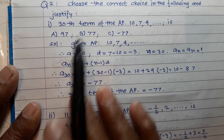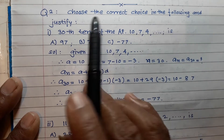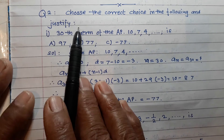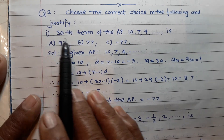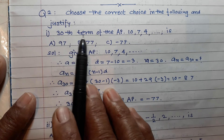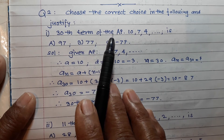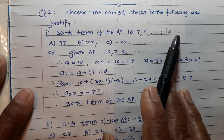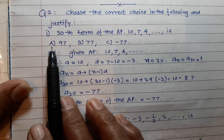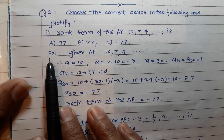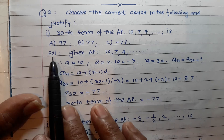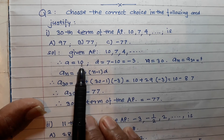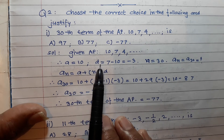Now question 2: choose the correct choice and justify. Question 2(1): find the 30th term of the AP 10, 7, 4, ... Options are given. Let's solve it.